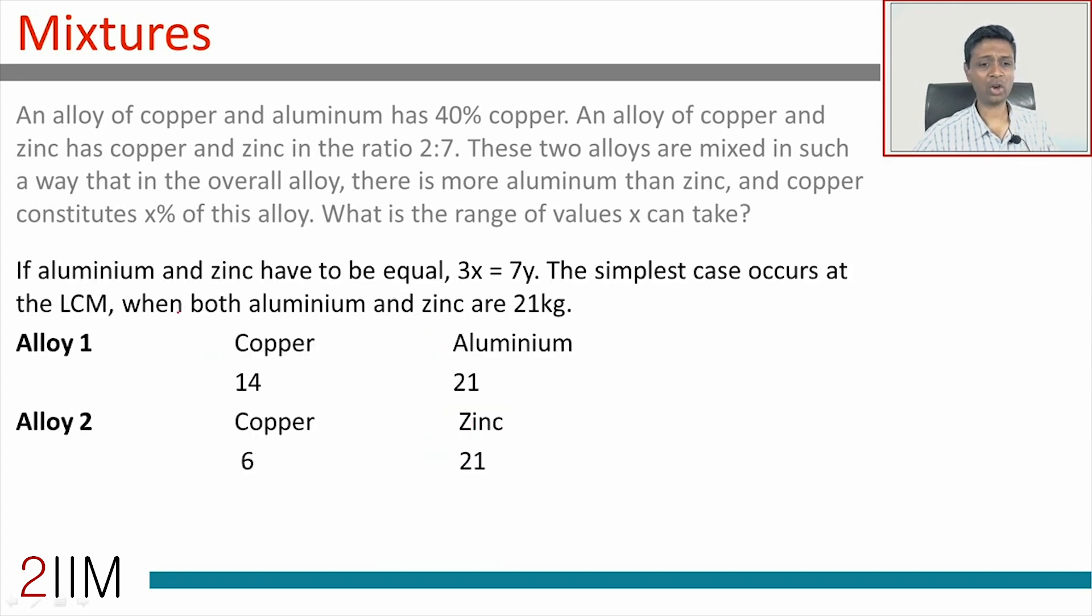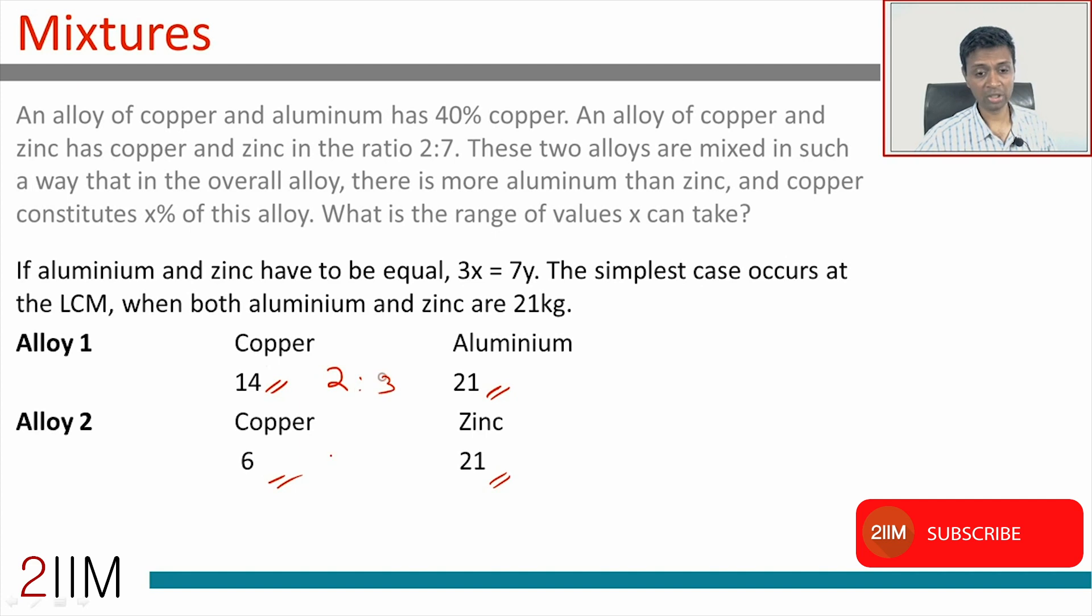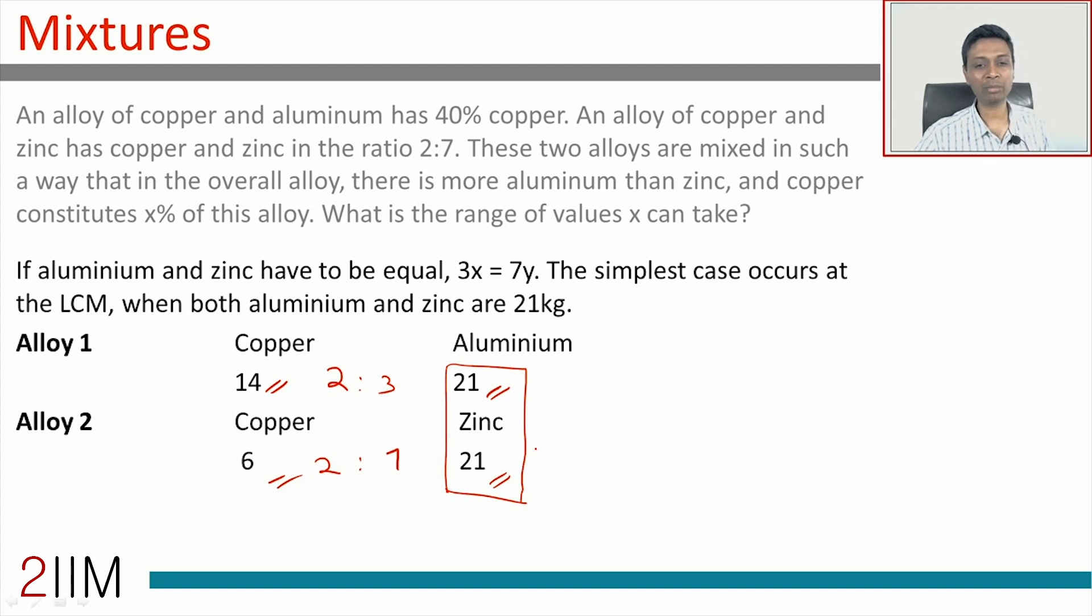Let's say alloy 1 has 14 is to 21 and alloy 2 has 6 is to 21. This is the same 2 is to 3, the same 2 is to 7. Notice why we have done this, because we love the fact that this is 21. If you have 35 units of alloy 1 and 27 units of alloy 2, this 35 units will have 14 of copper and 21 of aluminum, this 27 will have 6 of copper and 21 of aluminum.